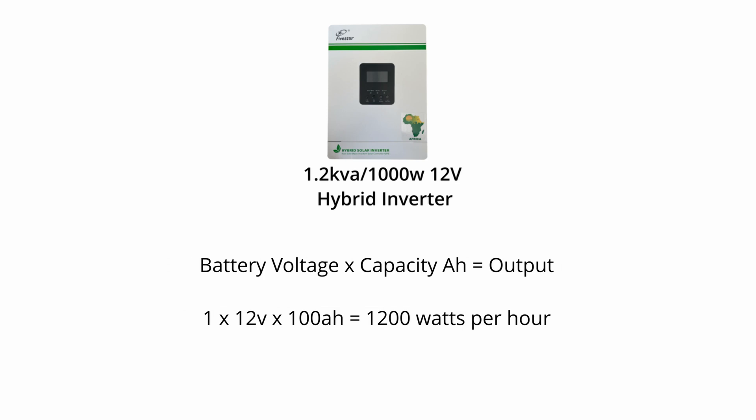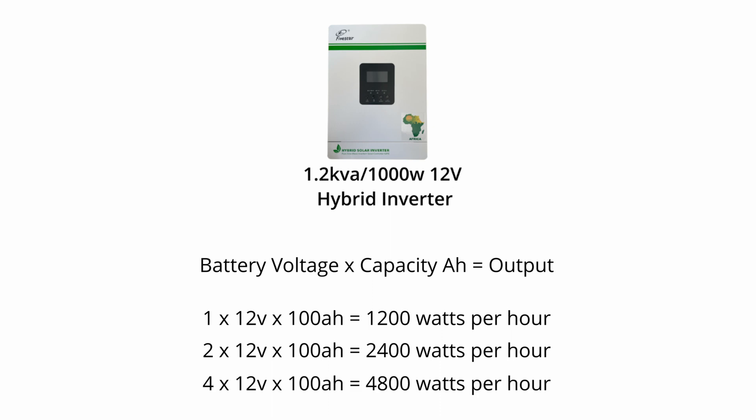The next question is: how do we calculate what the battery system is capable of doing? To calculate the output of the batteries, you take the battery voltage of the system and multiply it by the capacity in amp hours. So for example, if you have one 12 volt battery at 100 amp hours, the system would be capable of doing 1200 watt hours. Two batteries: 2400 watts. Four batteries: 4800 watt hours.